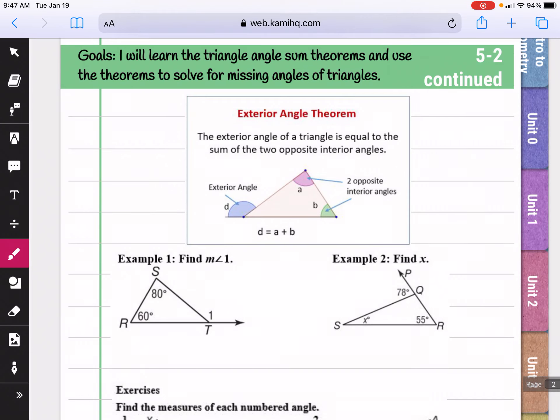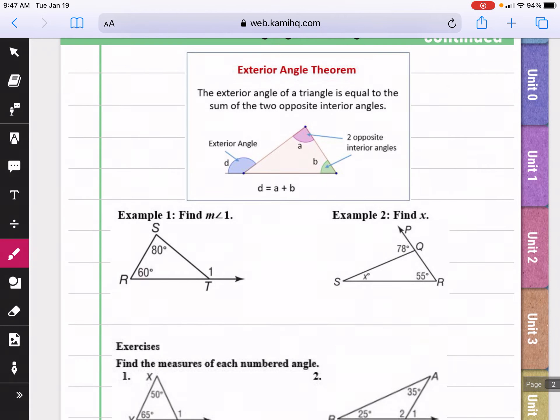In this next video, we're going to continue with angles of triangles, but this time we're going to talk about the exterior angles. So when you have a triangle, the exterior angle is the sum of the two opposite interior angles.